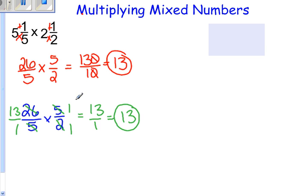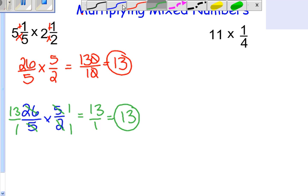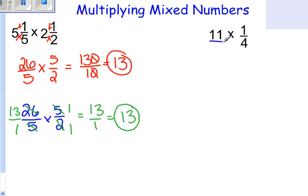Two different methods to solve the same problem. Now let's practice another example. We have 11 times 1 over 4. To multiply a whole number times a fraction, we first need to make the whole number a fraction. Change the whole number into a fraction by putting it over 1. 11 over 1 times 1 over 4.